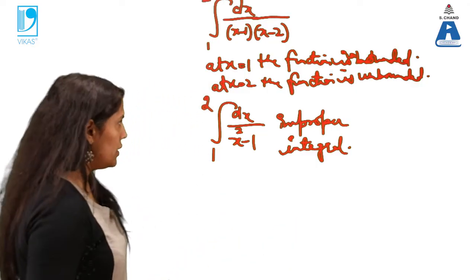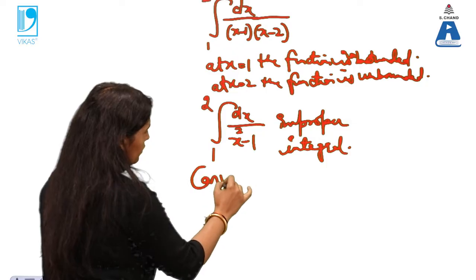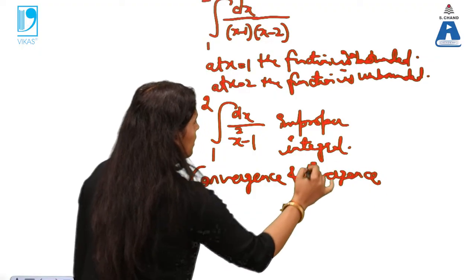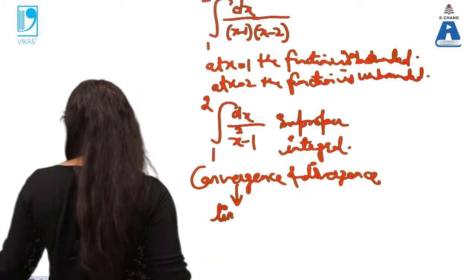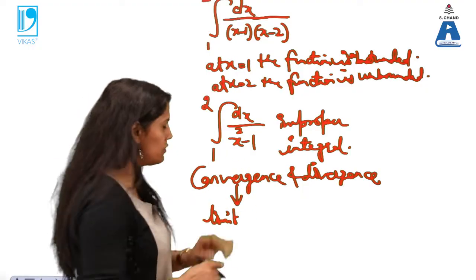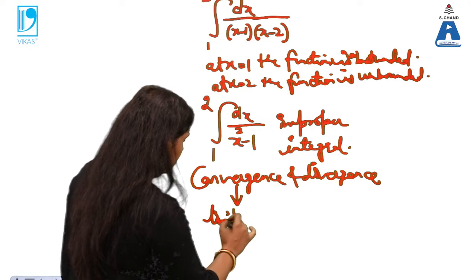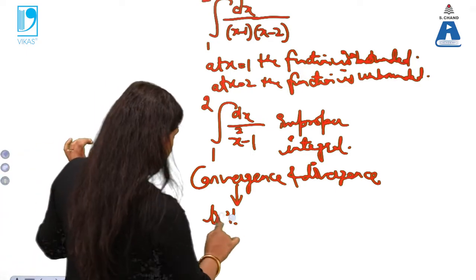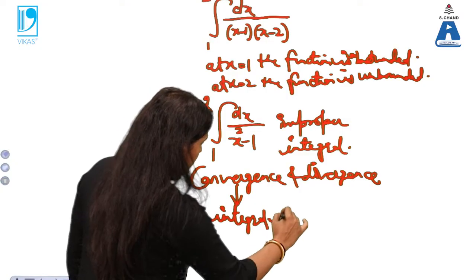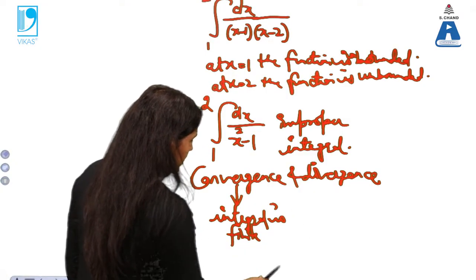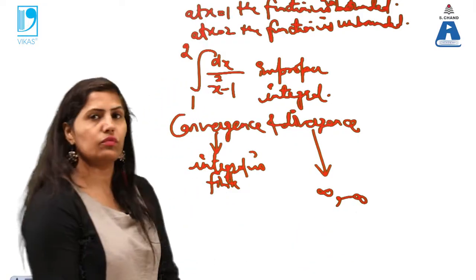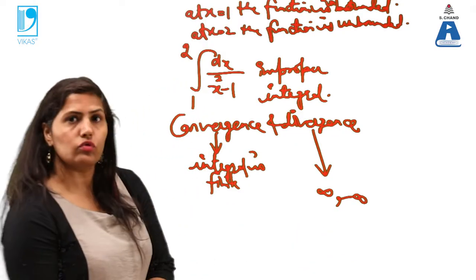Another term related to improper integrals is convergence and divergence. Convergence means the integral is finite — there is some value for the integral. Divergence means the answer is infinity or minus infinity.